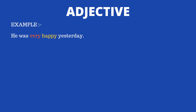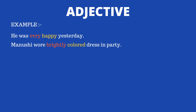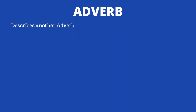Now let's look at adverbs describing adjectives. For example: 'He was very happy yesterday.' Here 'happy' is an adjective and 'very' describes the intensity of his happiness. Another example: 'Manushi wore a brightly colored dress at the party.' Here 'colored' is the adjective and 'brightly' is the adverb, which increases the intensity of the description.